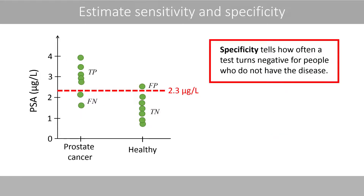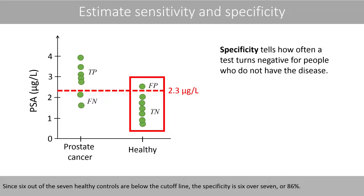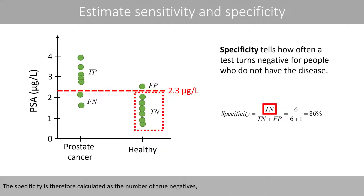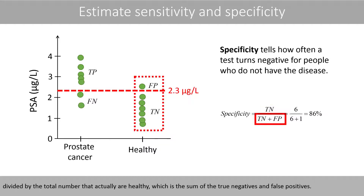Specificity tells how often a test turns negative for people who do not have the disease. Since 6 out of the 7 healthy controls are below the cut-off line, the specificity is 6 over 7, or about 86 percent. The specificity is therefore calculated as the number of true negatives divided by the total number that actually are healthy, which is the sum of the true negatives and false positives.